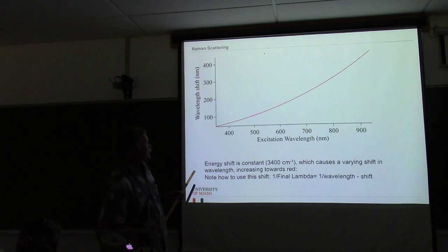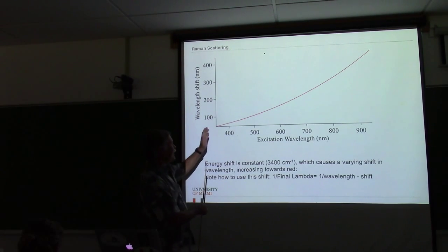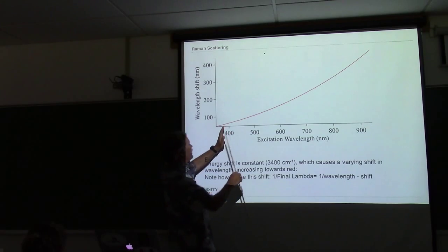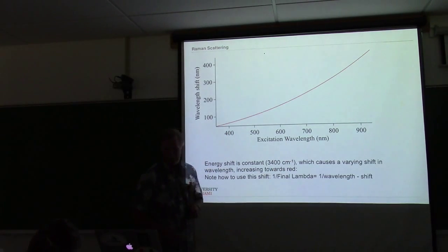That energy shift of 3,400 inverse centimeters causes a varying shift in wavelength across the spectrum. If you excite at 400 nanometers the shift is on the order of 60 nanometers; if you excite at 600 nanometers the shift is on the order of 120 nanometers. It's a constant energy shift but varies with wavelength — always taking light from the blue and shifting it up into the red wavelengths.